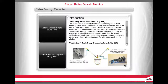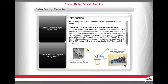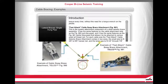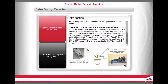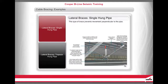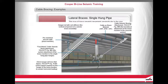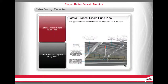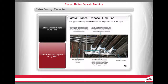The Fast Attach Cable Sway Brace Attachment, Figure 991, is the system attachment component of a cable seismic brace assembly. It has the same features on the cable attachment side as the Figure 990, and the same features as the Figure 981 that allow it to be attached to various sized all-thread rod. For each cable size, the Figure 991 comes in two sizes: small to fit 3/8 inch to 5/8 inch hanger rod, and large to fit 3/4 inch through 7/8 inch rod. This type of brace prevents movement perpendicular to the pipe.